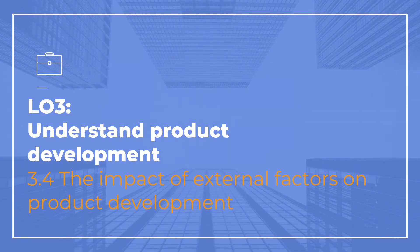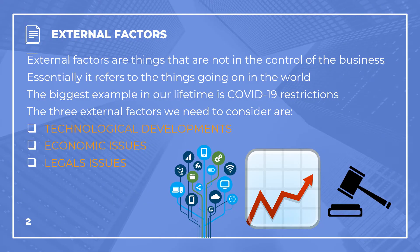This video is for Learning Outcome 3, specifically 3.4, looking at the impact of external factors on product development. External factors are things that are not in your control — as a business, they're not in your hands. They essentially refer to things going on in the outside world; the biggest example in our lifetime is COVID-19 restrictions. The three external factors we need to consider are technological developments, economic issues, and legal issues.